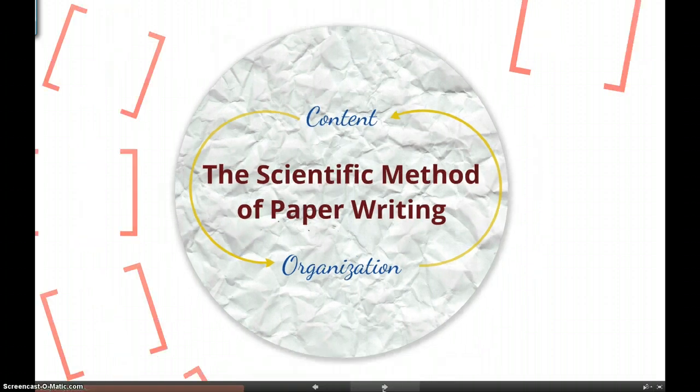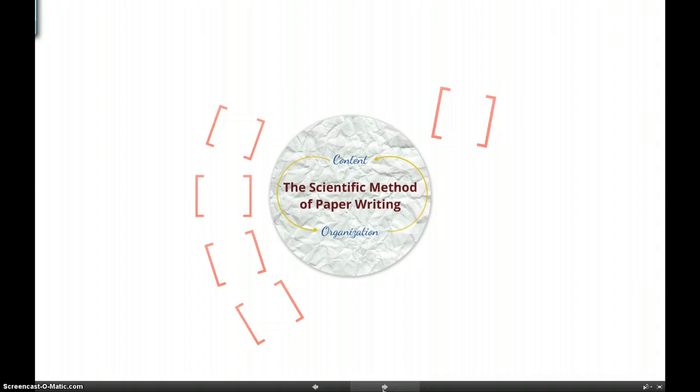You should probably remember learning the scientific method. Here is a shortened version of it. First, make an observation. Form a hypothesis. Next is form a hypothesis or guess about your observation. Then experiment. And finally, accept or reject your hypothesis.